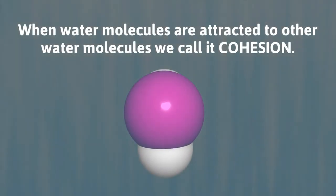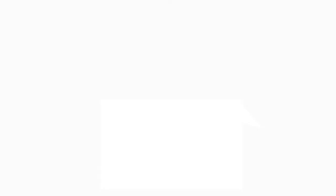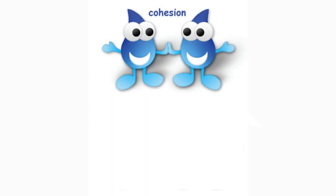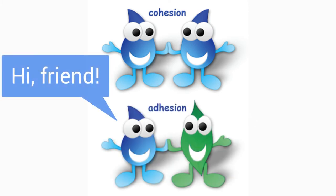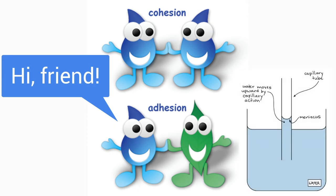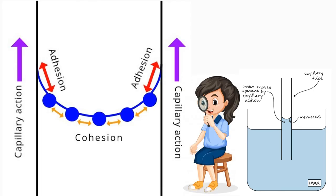When water sticks to or is attracted to other water molecules, we call this cohesion — it's a cohesive force. If water is attracted to other substances, like for example glass or plastic, we call this adhesion — it's an adhesive force. The combination of these two forces creates something called capillary action.